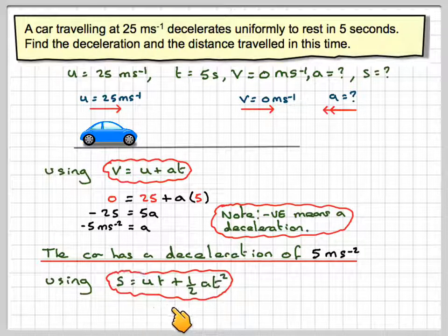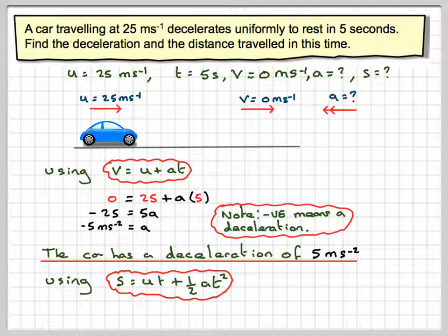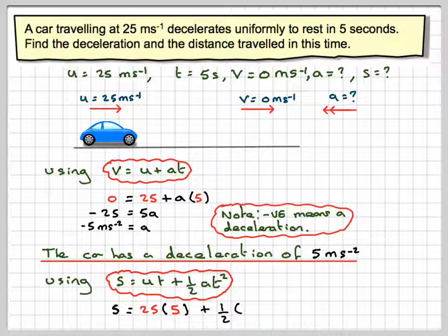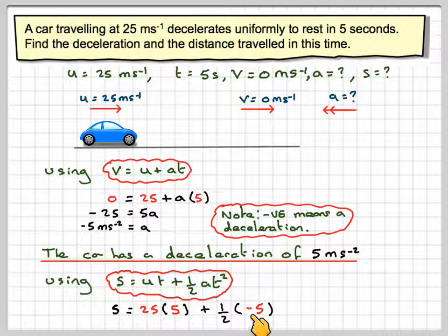Using S is equal to UT plus a half AT squared, we've got that the S will be equal to 25 times 5, plus a half times minus 5, times 5 squared, which equals 62.5 metres.